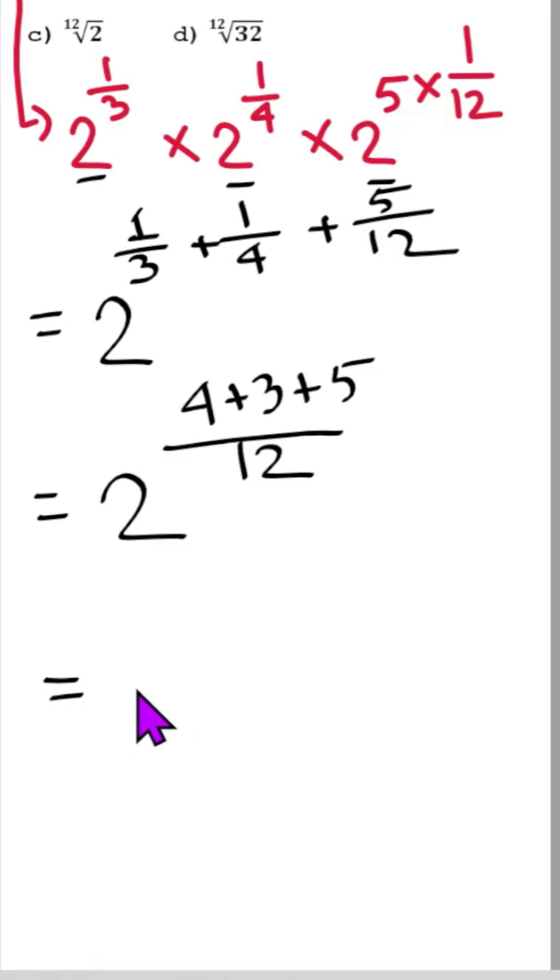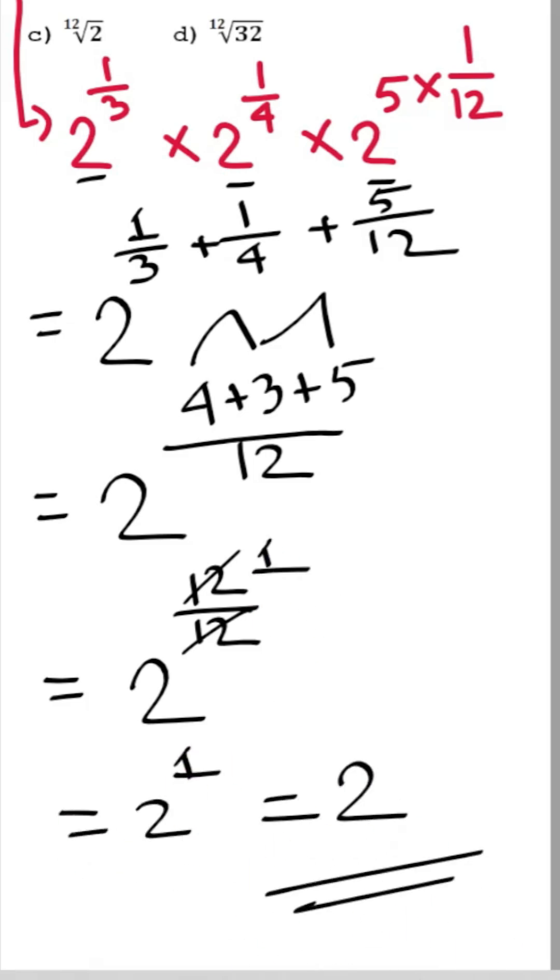Next, this is 2. 4 plus 3 is 7, 7 plus 5 is 12. So 12 divided by 12 is 1. Here is 2 to the power 1, and our answer is 2. Very simple.